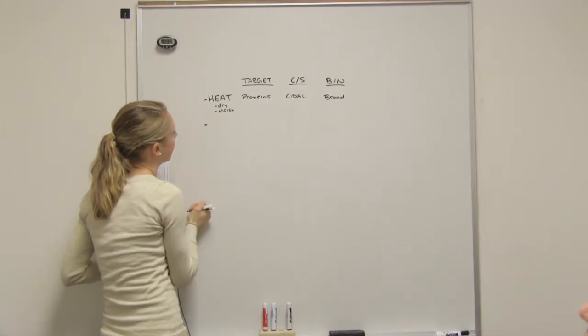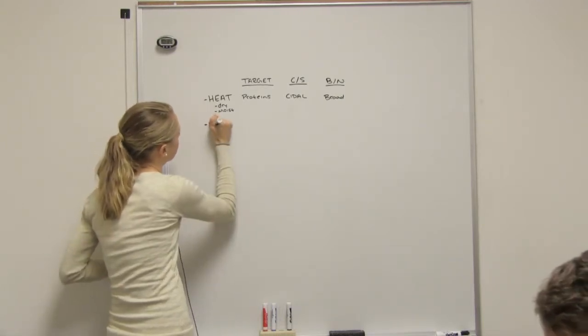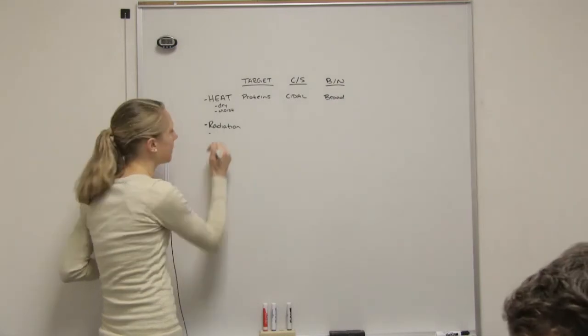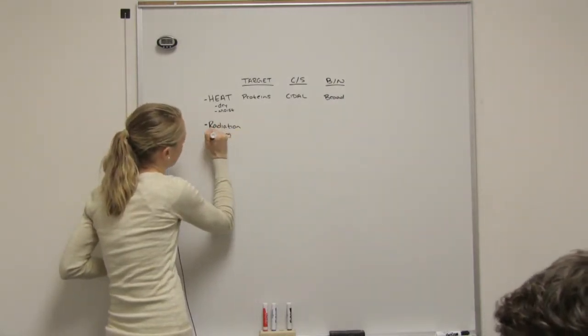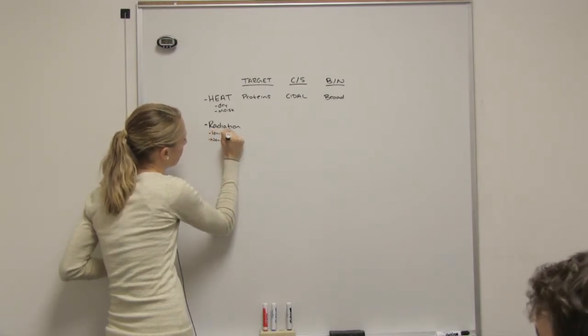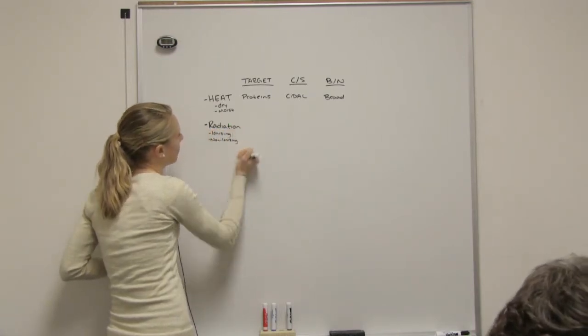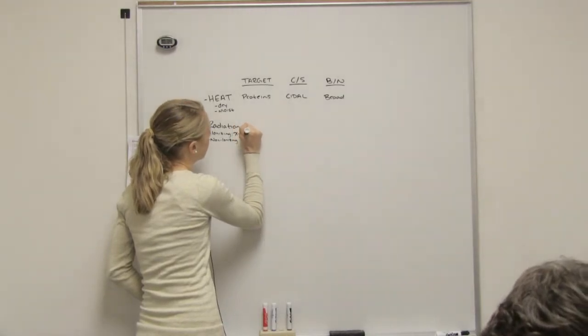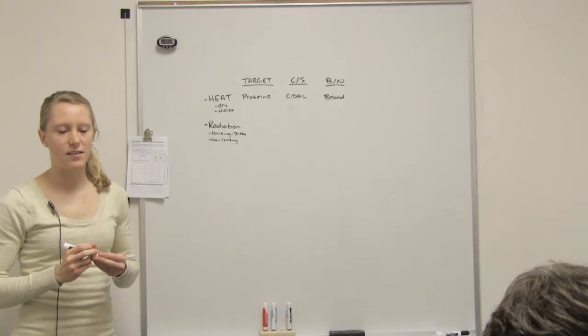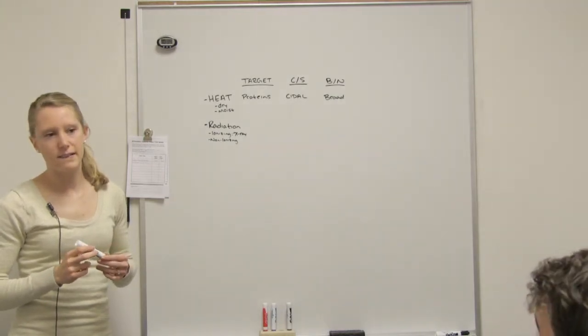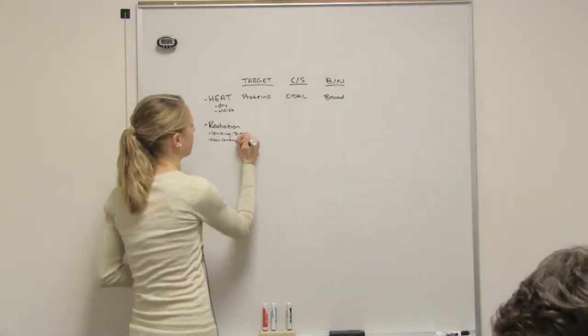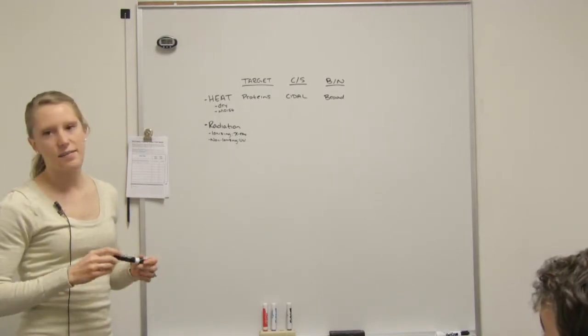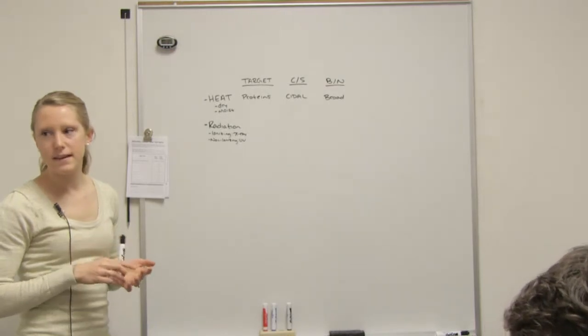What's another physical method? Radiation. There are two kinds of radiation - ionizing and non-ionizing. Which one's more harmful? Ionizing. Do you guys know examples of ionizing radiation? X-rays. Gamma rays. Stuff that you don't want to be exposed to. What about non-ionizing? It's like UV light. It's not as big of a deal. It still does damage, but it's not as bad. What's the target? Nucleic acid.